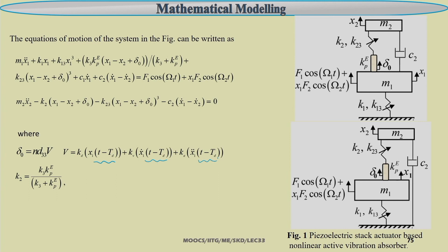Here you can note that τ_D is the time delay term associated with the feedback. This part is the displacement feedback, this part is the velocity feedback, and this part is the acceleration feedback. You can take a combination of all three, or one or two of them at a time, and do this analysis for completeness. In practice you may take one, two, or any combination of these three depending on the system or application.